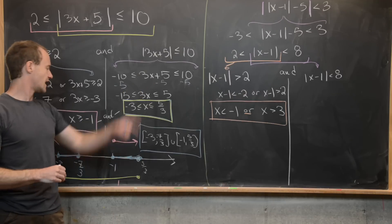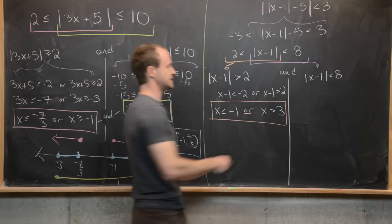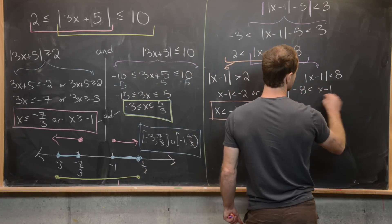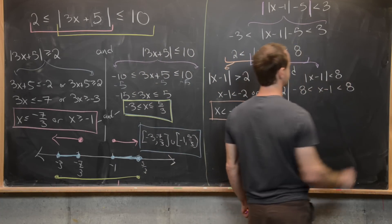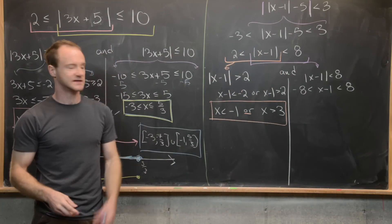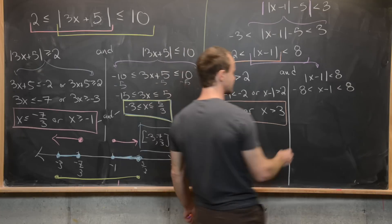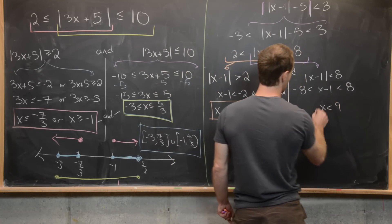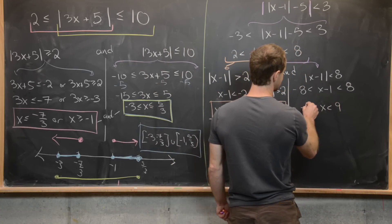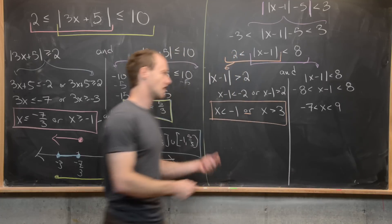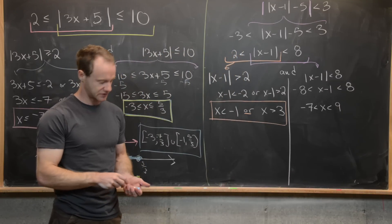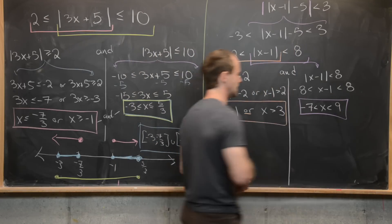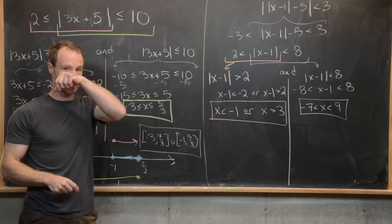Now let's work on the purple side: the absolute value of x minus 1 is less than 8. That gives us the triple inequality negative 8 is less than x minus 1, which is less than 8. Adding 1 to all sides gives us negative 7 is less than x, which is less than 9. That is the solution the purple inequality satisfies.